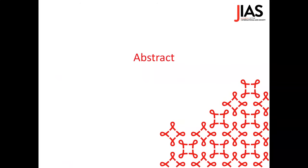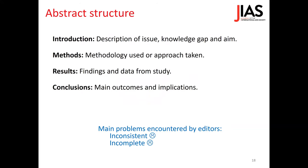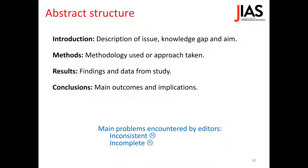The abstract is the next section most often read after the title. Because most of the time, it is also freely accessible even if the journal is not fully open access. The abstract includes all the important details and data from your research study — it's a brief summary and can serve as a standalone summary of the work. There is usually a word limit of between 150 and 350 words, which you can confirm in the journal guidelines.